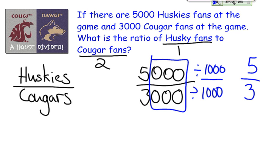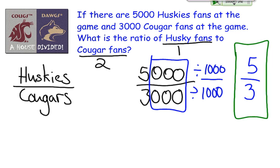Now, from here you might say, oh, 5 thirds — that's an improper fraction, let's reduce that and turn it into a mixed number. And this is where ratios are different. We're not going to change these into mixed numbers, because by doing that it's going to take away the comparison. So we want that comparison to stay. And to keep that comparison, we're going to leave our answer as an improper fraction. So the answer is 5 over 3 — 5 Husky fans for every 3 Cougar fans.